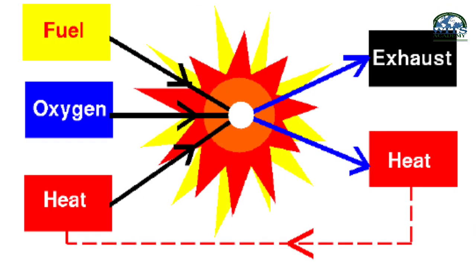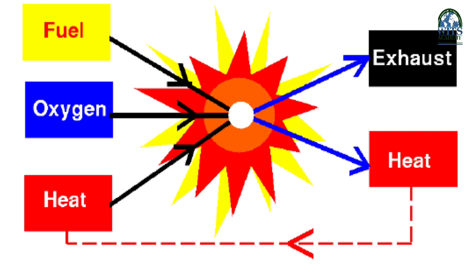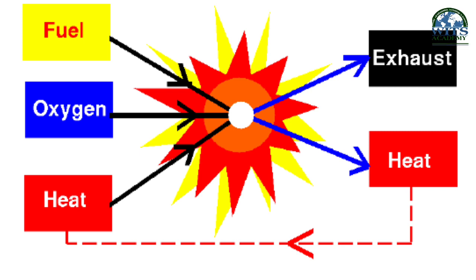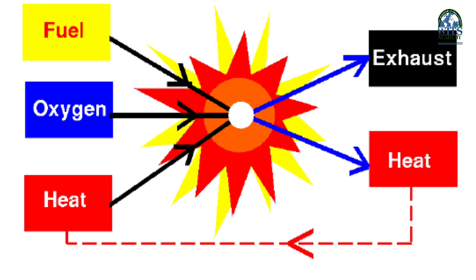Number one point: respiration mein energy bahut slow release hoti hai, jabke burning mein energy tezi se release hoti hai. Isi tarah se respiration ki rate ko control kiya ja sakta hai. Aur respiration sirf heat produce karti hai, jabke burning mein heat ke saath light bhi produce hoti hai.